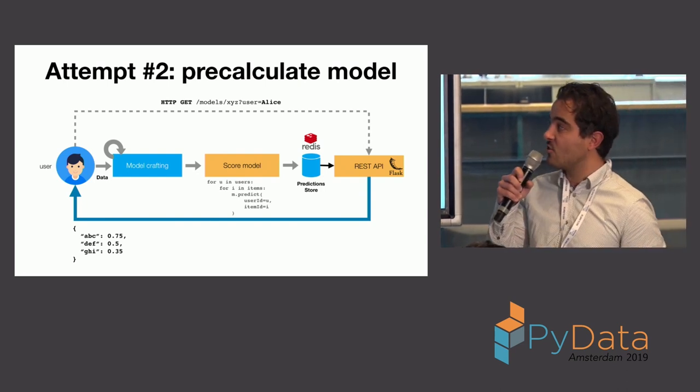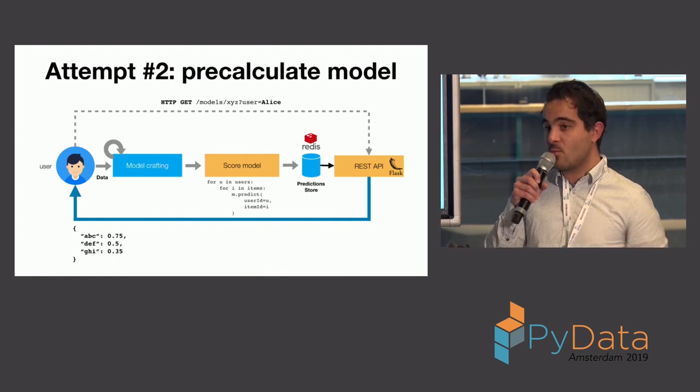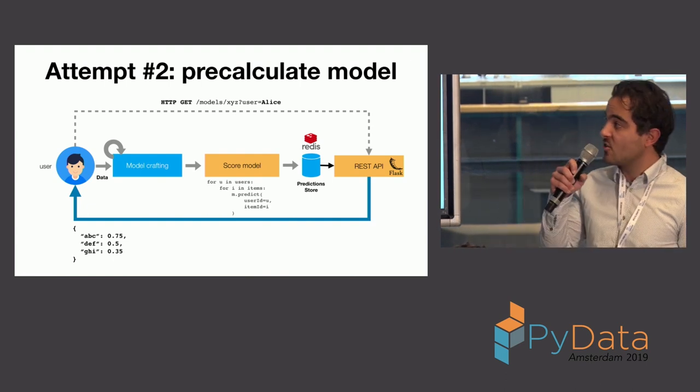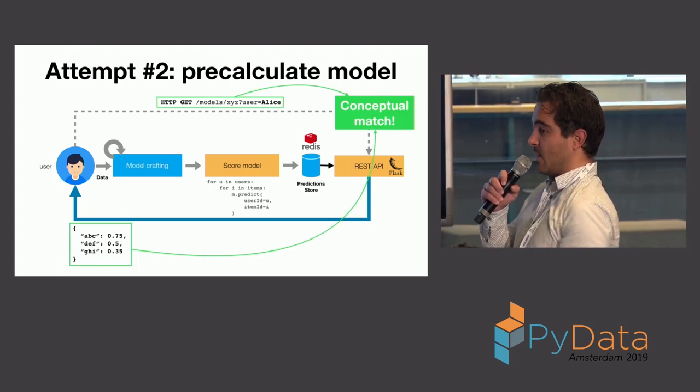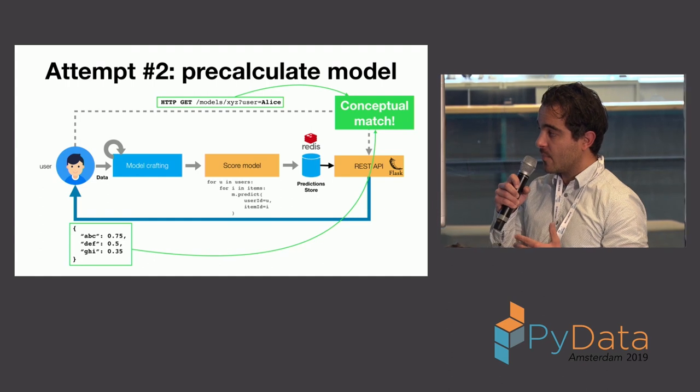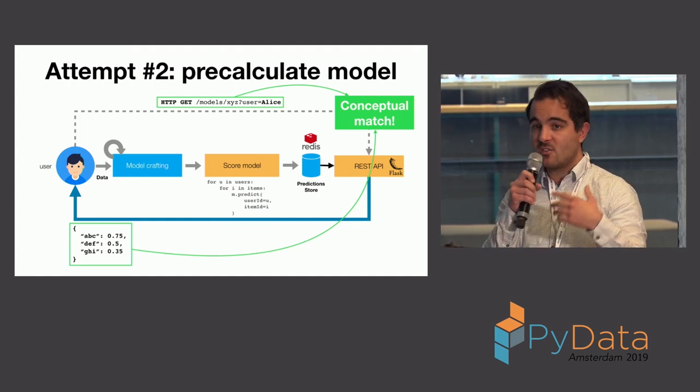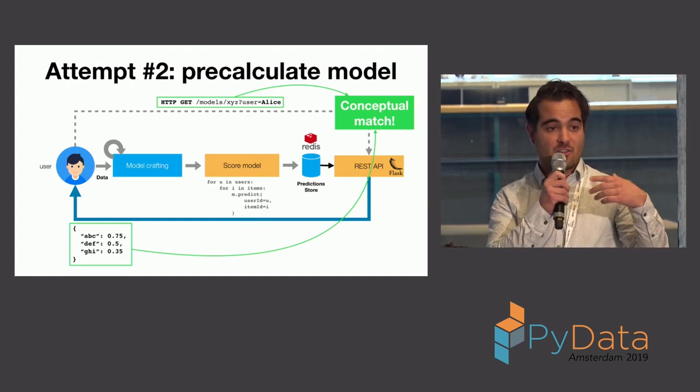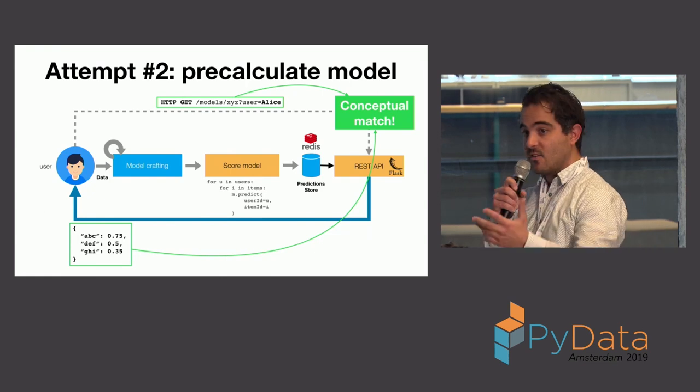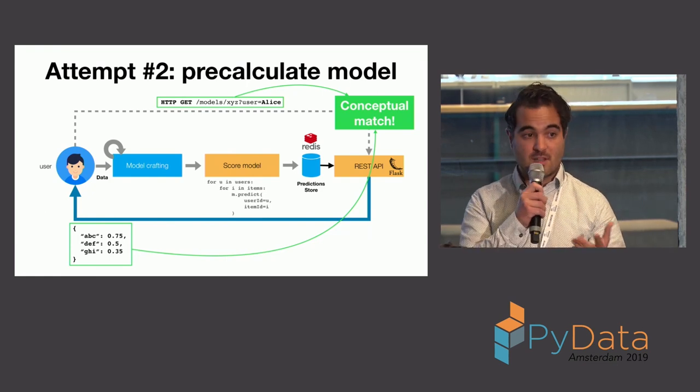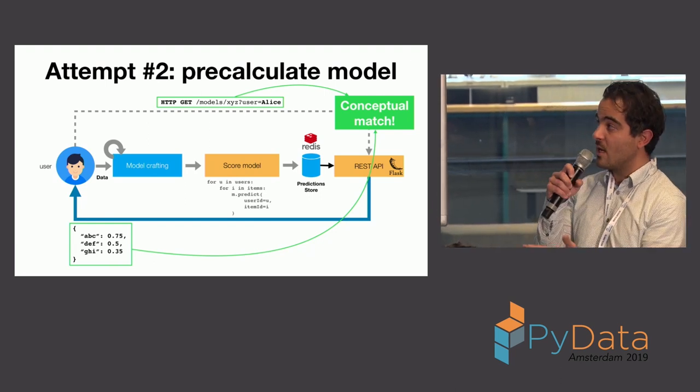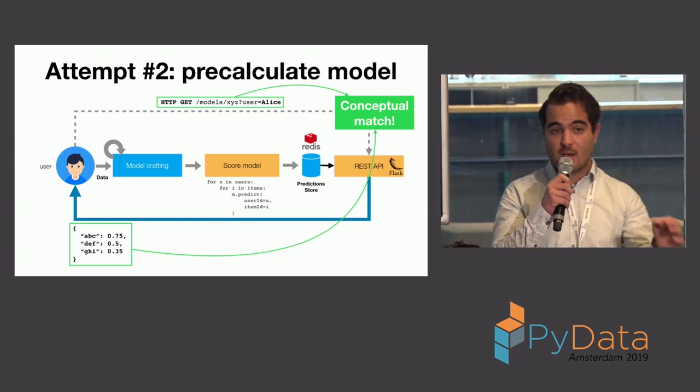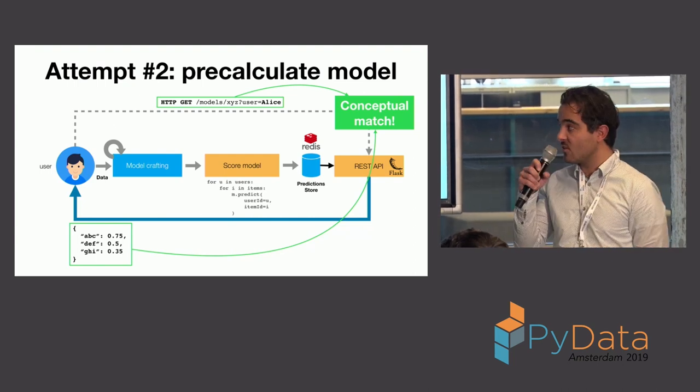and we store these in a prediction store, say Redis. And now, actually, when I do a REST call, I have a conceptual match. I can get a list back. So, I've gone from having to call the API using actually a user ID and an item ID to get back a predicted relevance between this combination. I've gone to being able to call the API when a user hits the homepage and give back a list of recommendations.